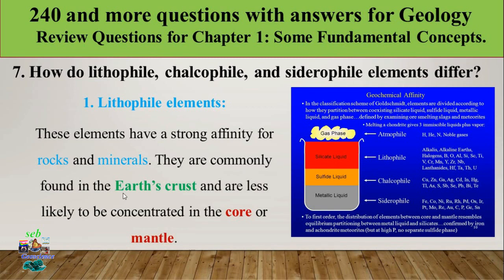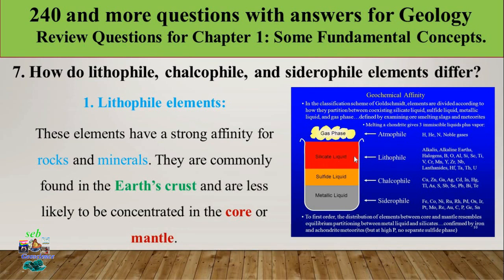Lithophile elements are commonly found in the Earth's crust and are less likely to be concentrated in the core or mantle. They include silicate-related elements with properties like alkali, alkaline, and halogen groups. Examples of lithophile elements include silicon, aluminum, potassium, and sodium.